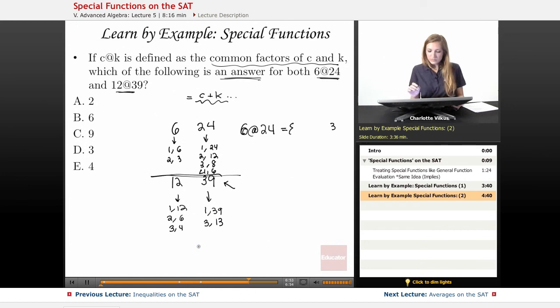So if I were just looking for 6 at 24, I'd say, okay, well, 1 obviously is in both of them. That's sort of redundant. But then I have 6 on both of them, and I also have 2 and 3 on both of them. So my answer here would be 1, 2, 3, and 6.